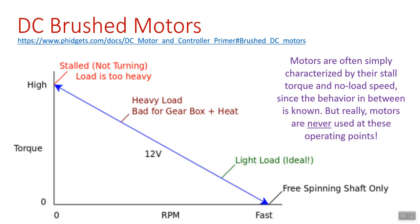If you have a scenario where you want the motor to be holding something — and that is very common — there are motors that do that, like stepper motors, but not one of these brushed DC motors. The other end is the free spinning shaft where there's no load on it, no torque being supplied. That would be its fastest speed. Your motors never work at either one of those two points, even though those are typically the values listed on a spec sheet — the stall torque and the free spinning or unloaded speed.